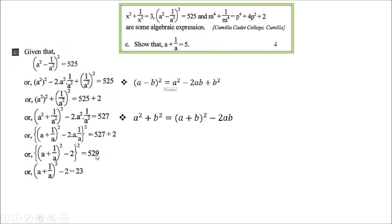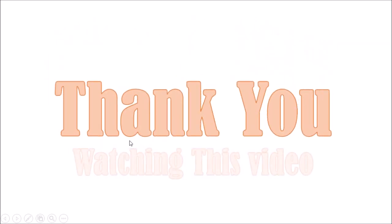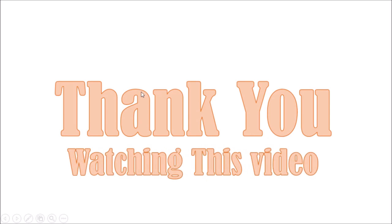Taking the square root: √529 = 23. Wait — after careful simplification, (a + 1/a)² = 25, and taking the square root gives a + 1/a = 5. You can use a calculator to verify. So the answer is shown. Thank you very much for watching this video. I hope it is very helpful. Pray to Allah for solving all your problems, and best of luck for your examination.